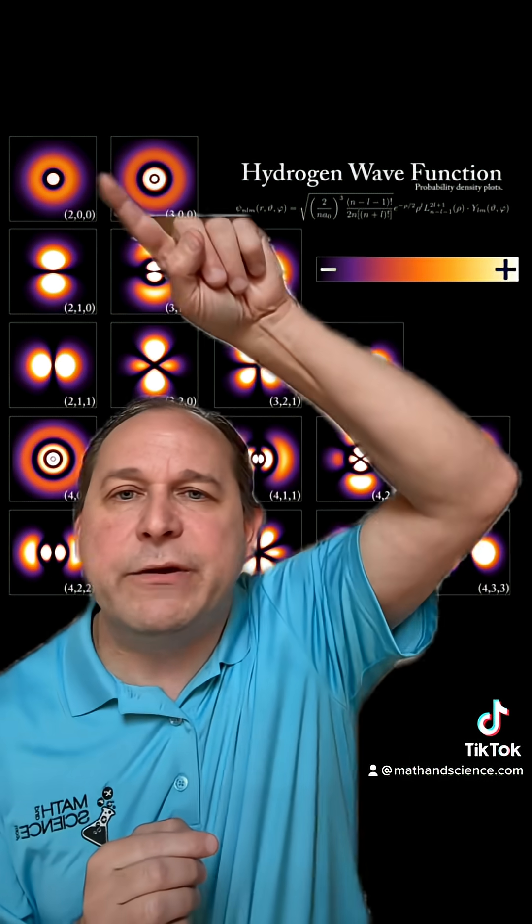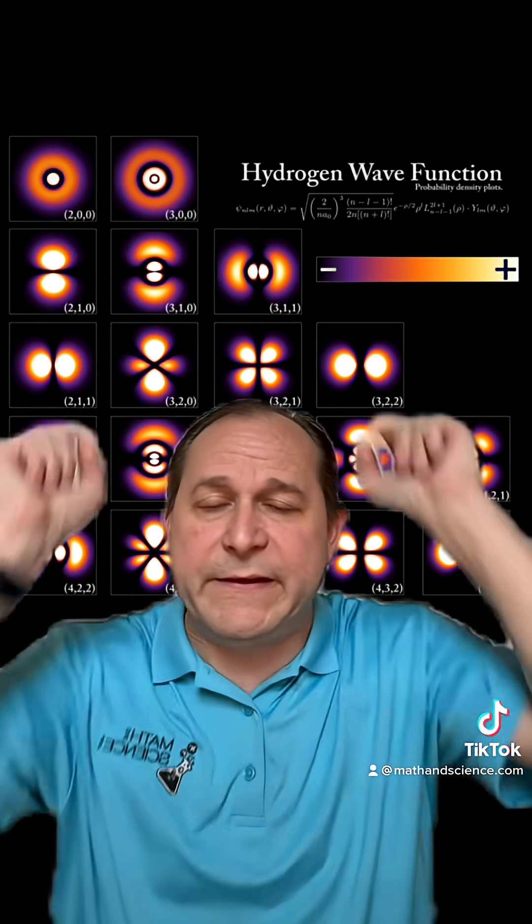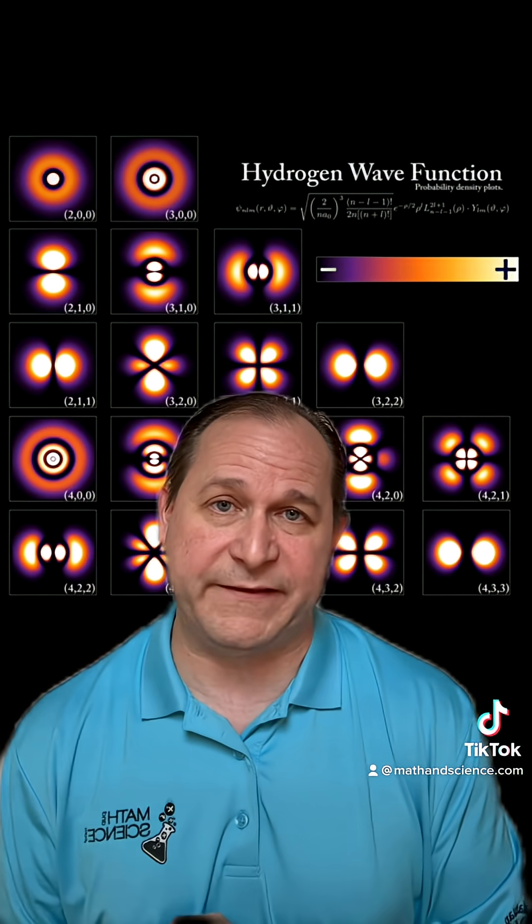But the crucial thing to point out here is that notice there's a fuzzy boundary here around all of these things. Everything's fuzzy, and that means the probability of finding an electron in any of these cases never goes to zero, even when you get really far away from the atom. It just gets closer and closer and closer to zero, but always above zero.